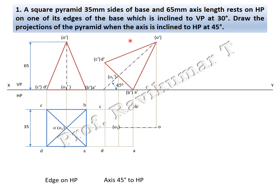Next, identify which edges are visible and invisible. Looking from the top, all outer edges are visible — complete them with visible lines. B to A is an invisible edge, shown with a red line. C to O is visible, B to O is visible, D to O is visible — only one edge is invisible. This completes the second position.